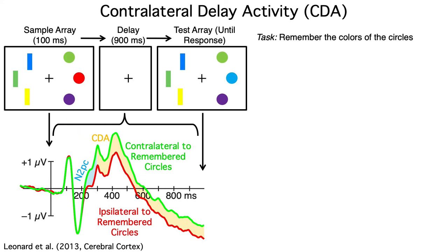The N2PC and CDA are added on to other components, but you can isolate them by looking at the difference between the contralateral and ipsilateral waveforms. Although they're both contralateral negativities, the N2PC and CDA have different scalp distributions, so they're distinct components.